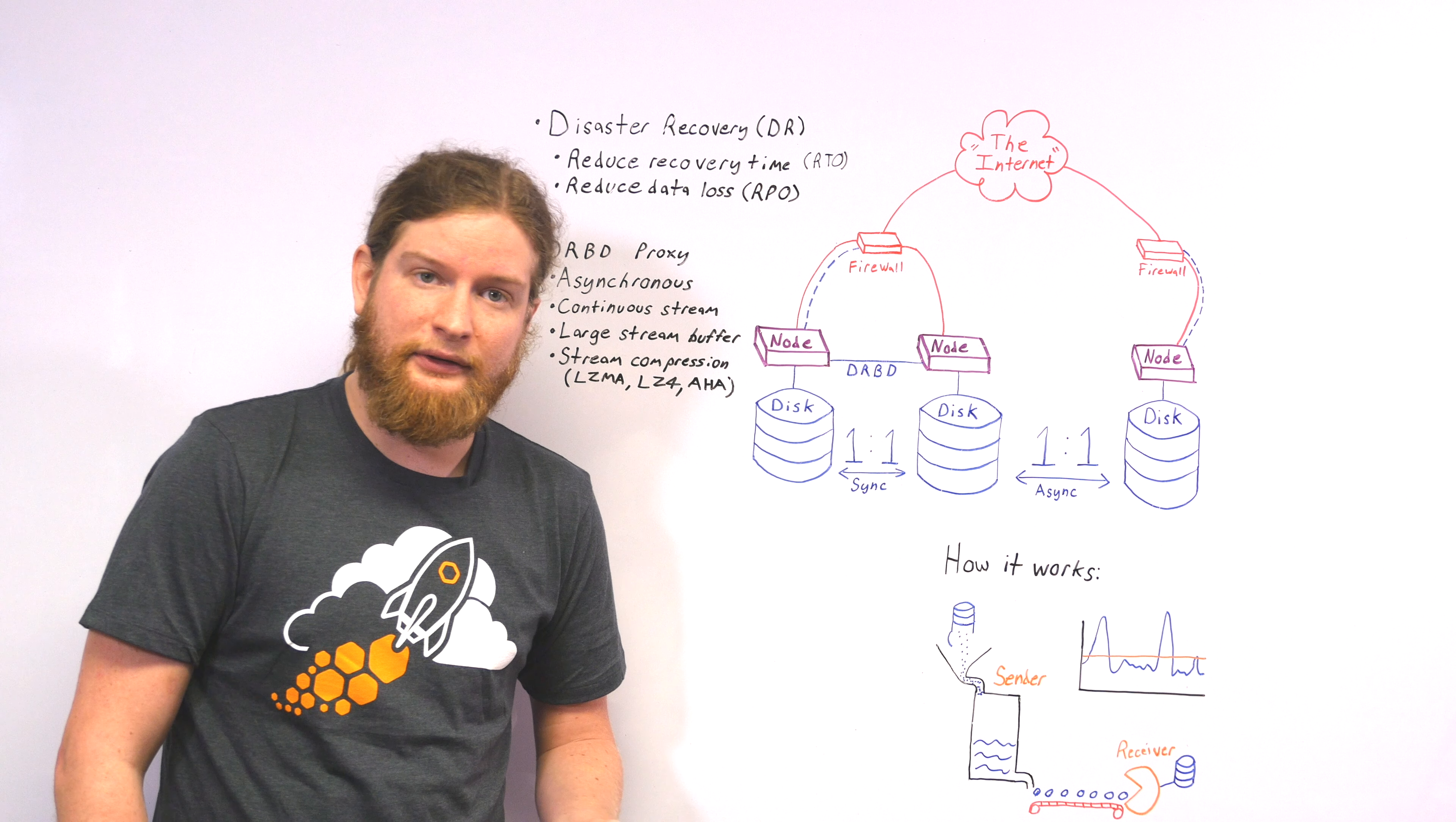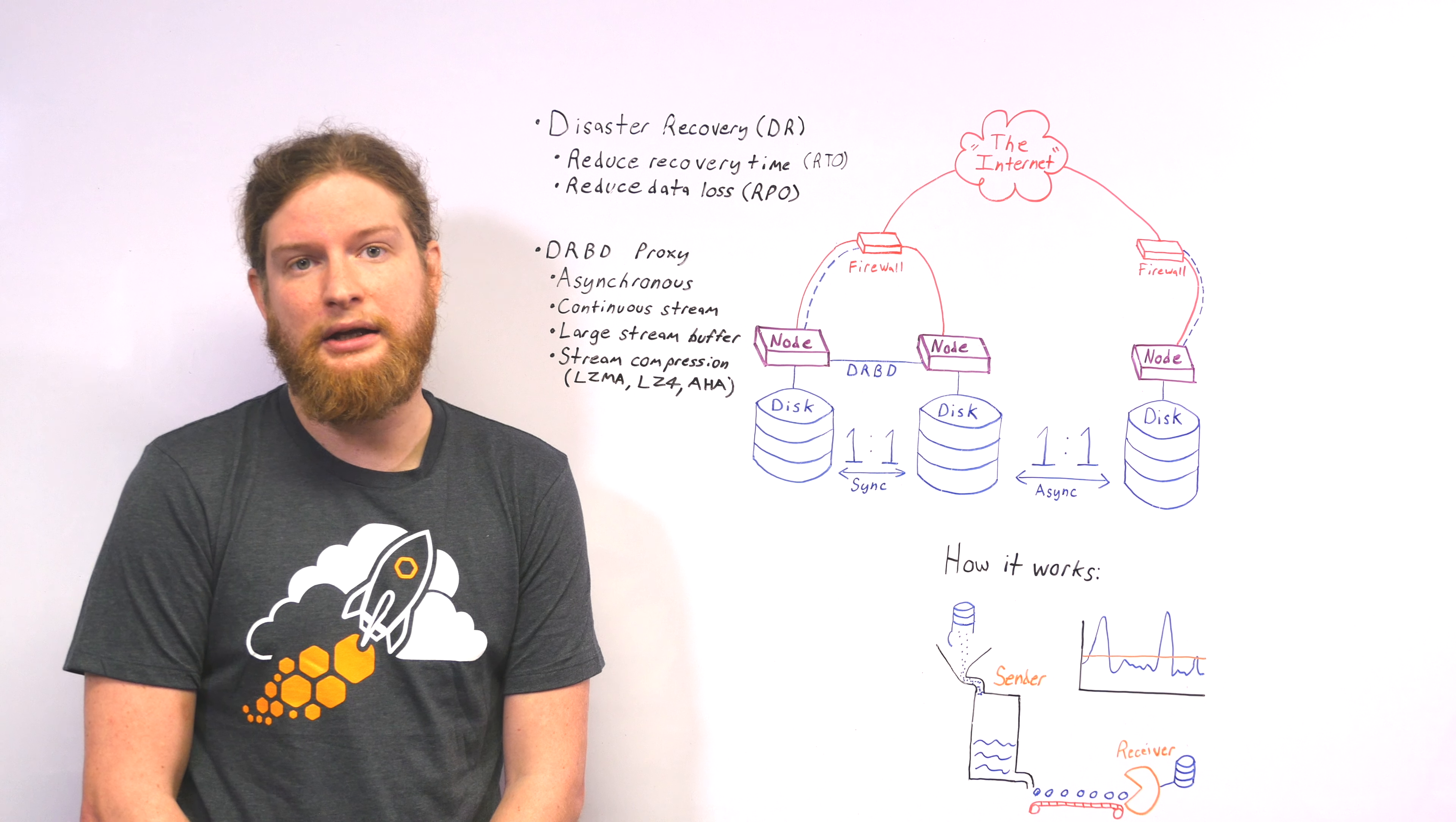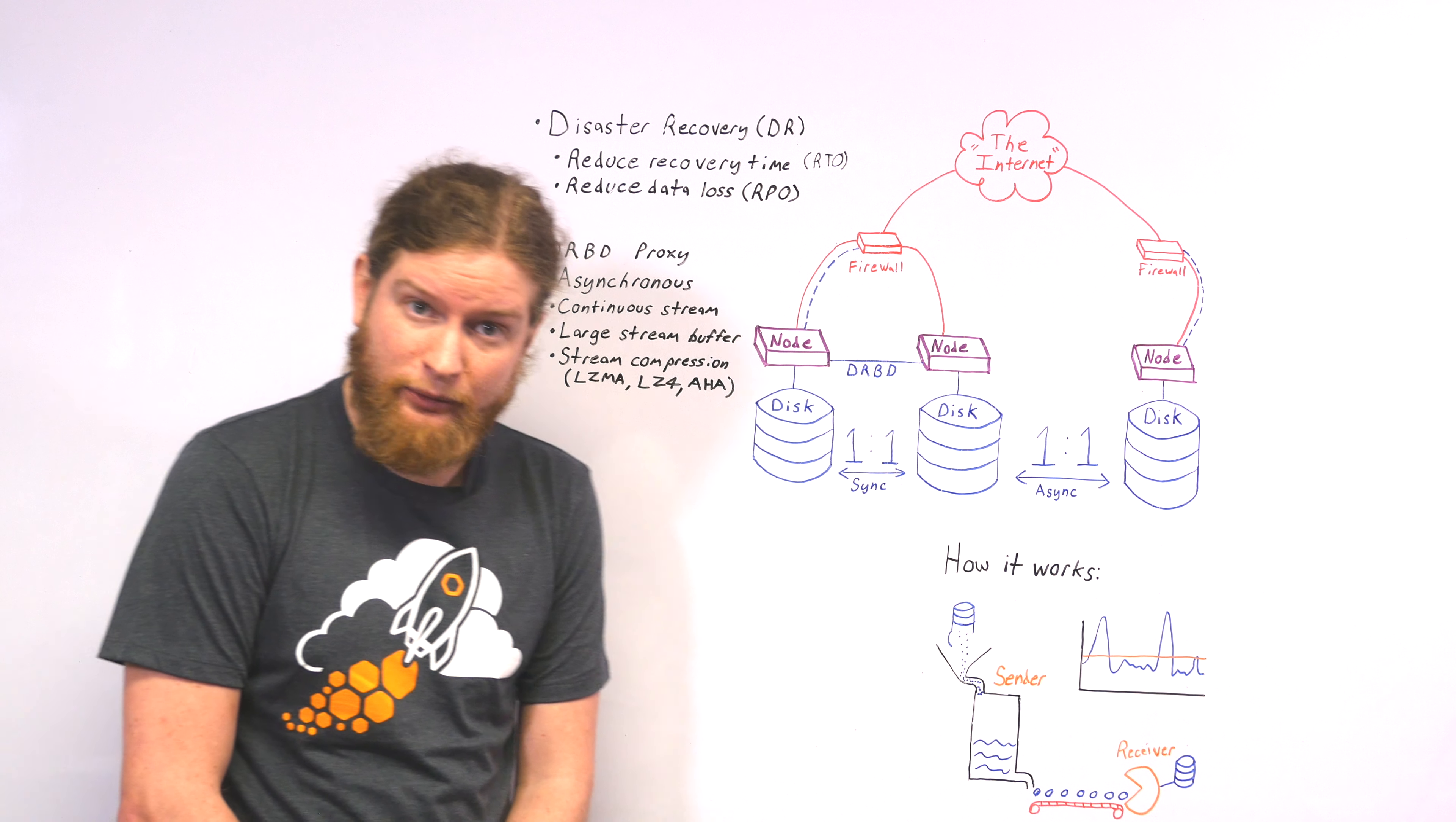This is done, in this case, using DRBD. DRBD is a block replication technology. You can use just about any file system or workload on top of it that you would like. Because it's a block streaming technology, we can actually just transfer the changes that are made as they're made rather than relying on a schedule.